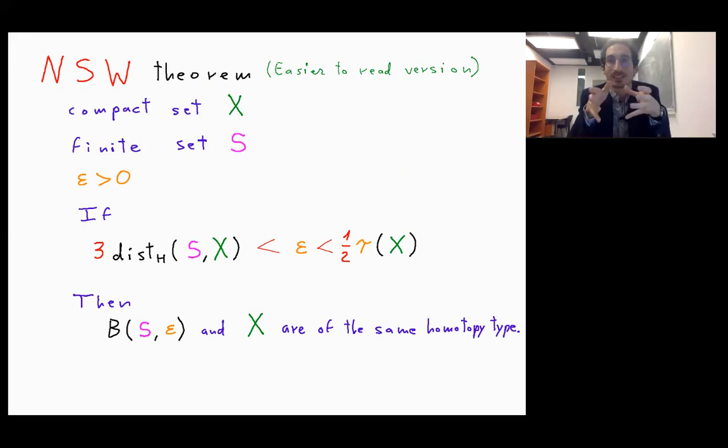So in this one, we can see that the fattening of the points in the sample should be slightly bigger than the Hausdorff distance of the sample to the set, but is smaller than the reach.